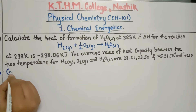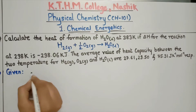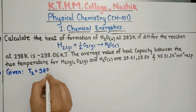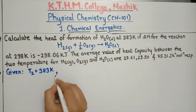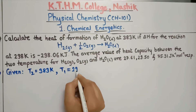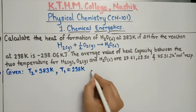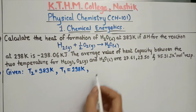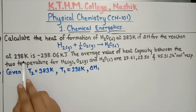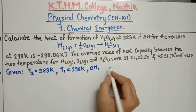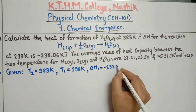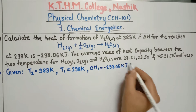Given: T₂ is 383 Kelvin, T₁ is 298 Kelvin. Delta H₁ at T₁ = 298 Kelvin is minus 298.06 kilojoule.